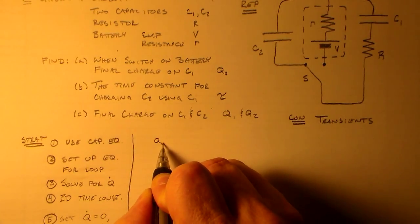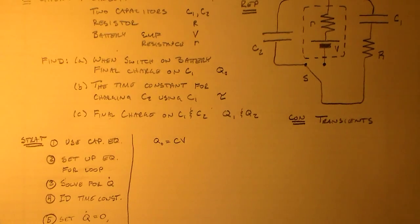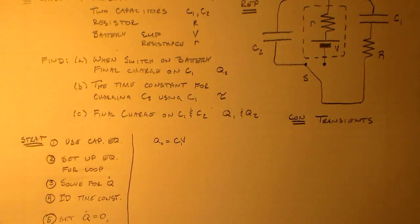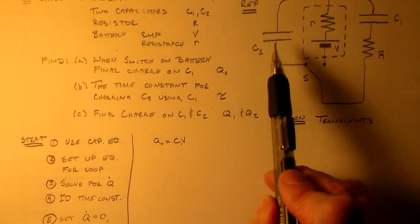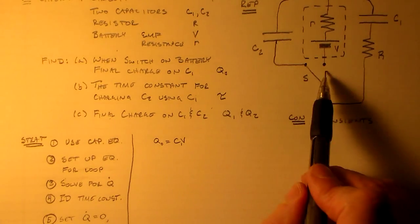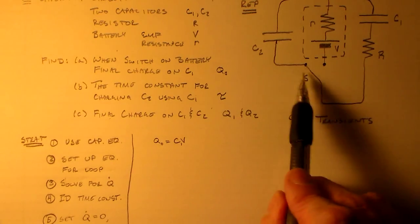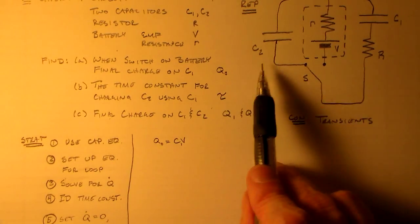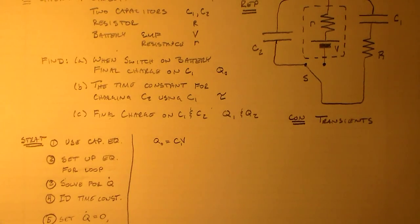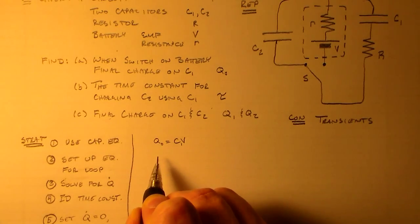Then we'll solve for Q dot. And then what we want, then we'll see what the time constant is. So we'll just have to identify time constant. And for part C here, we'll use this same equation up here. But we'll set Q dot equal to zero. And after we set Q dot equal to zero, we'll be able to find C1 and C2, or Q1 and Q2. So, it'll be pretty, pretty quick. So let's start with the capacitor equation.